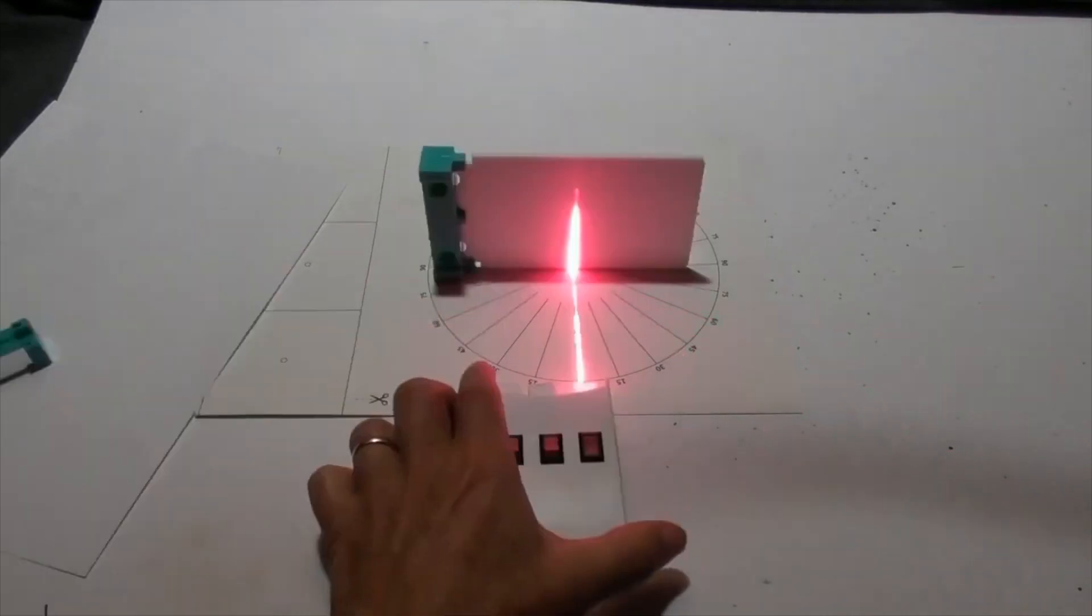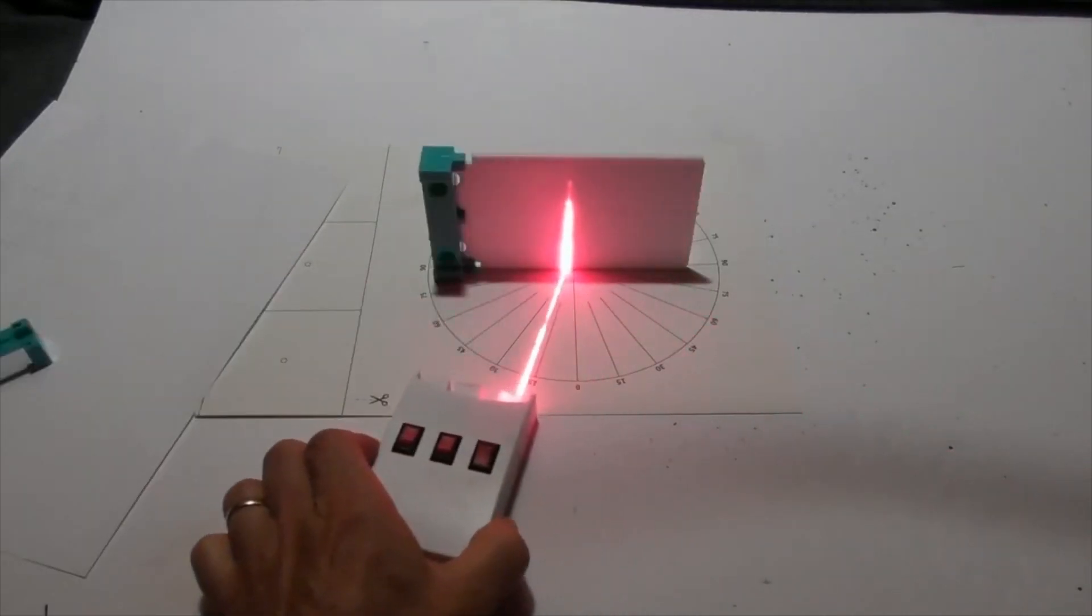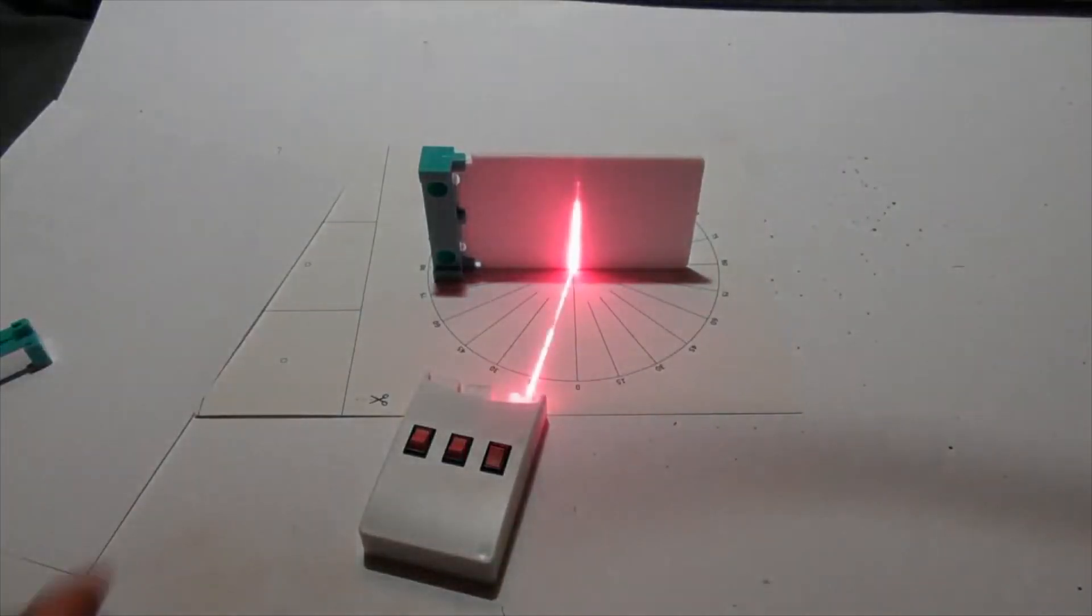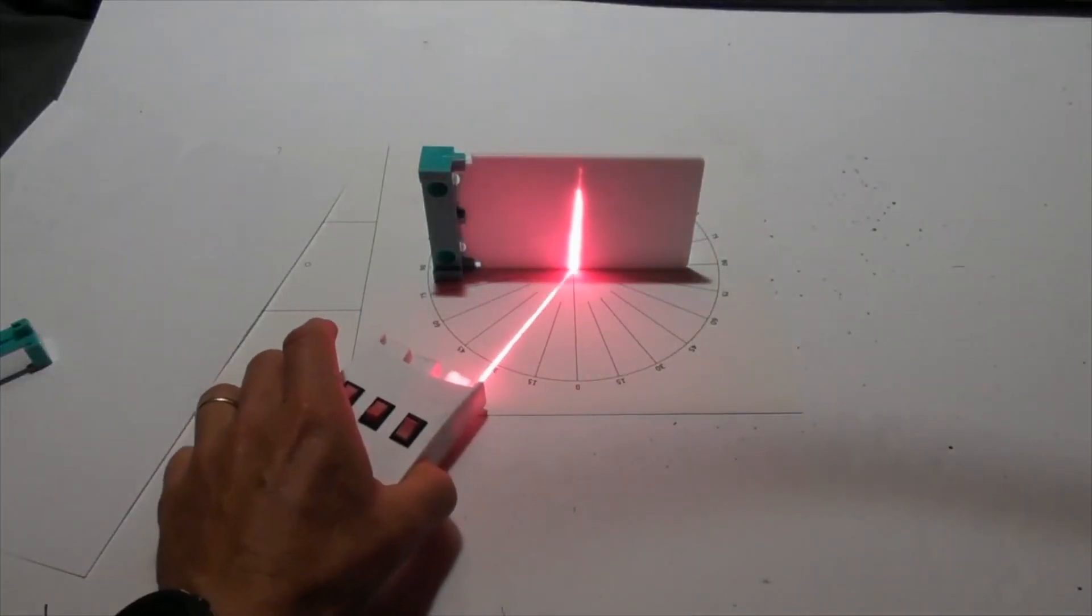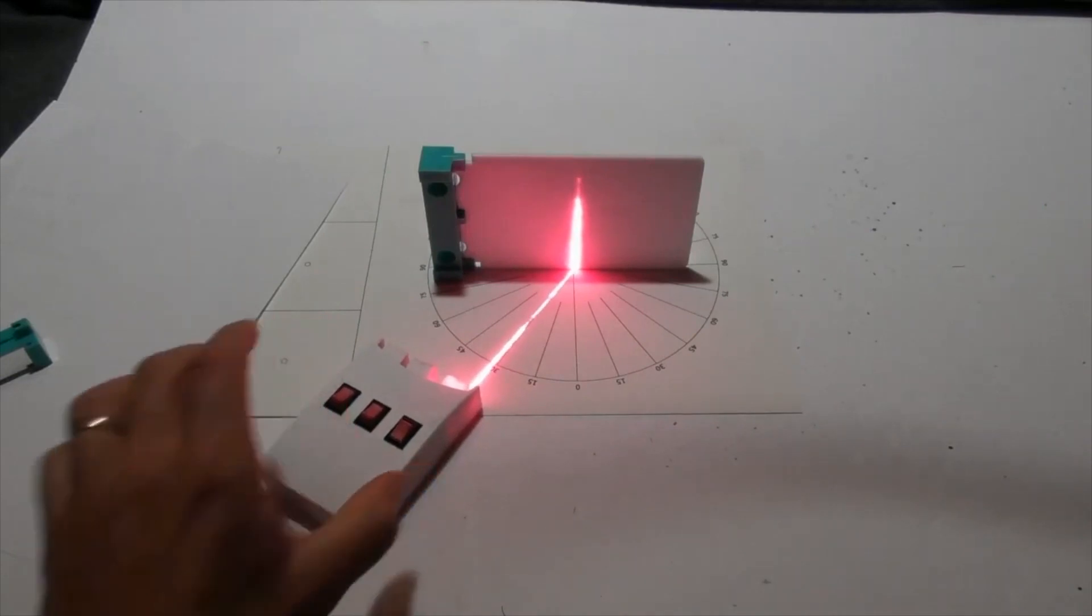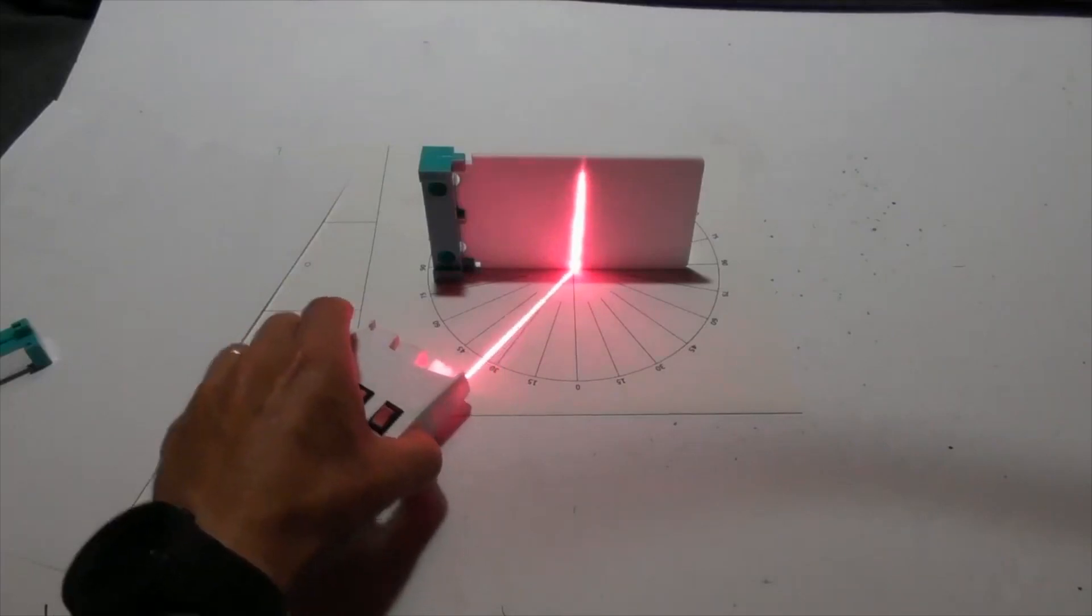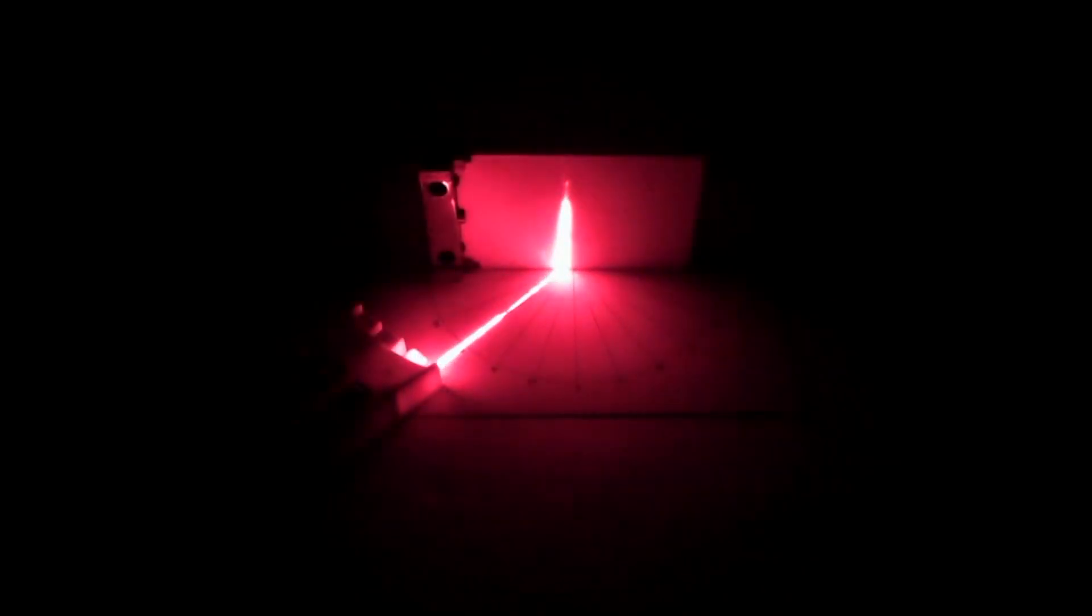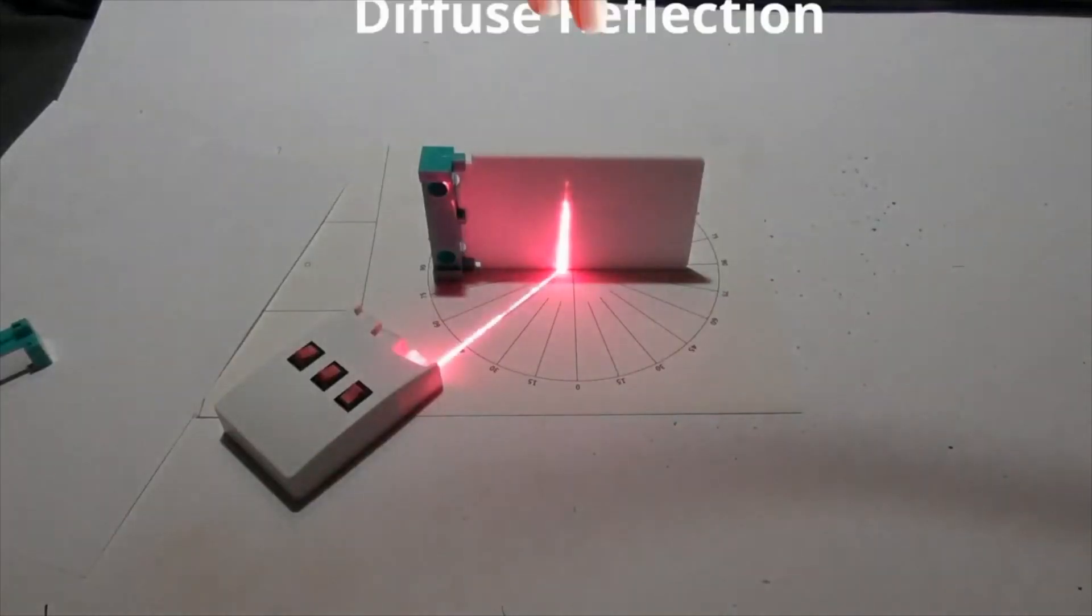Next, I have a dull object. Notice how the reflection always looks the same regardless of the angle. This is an example of diffuse reflection.